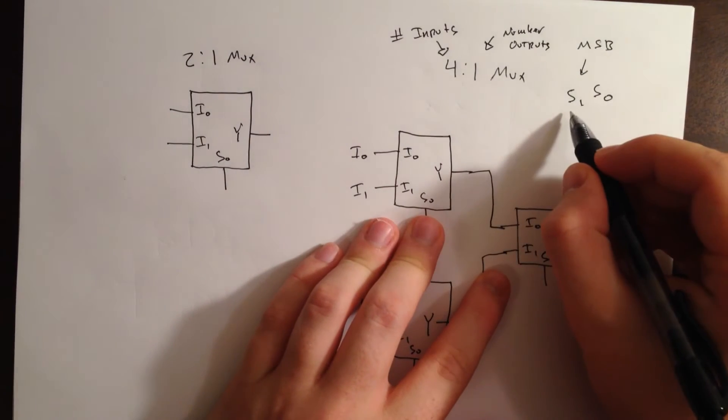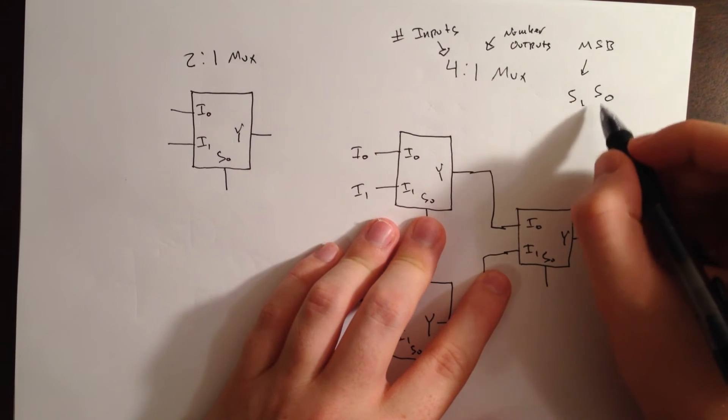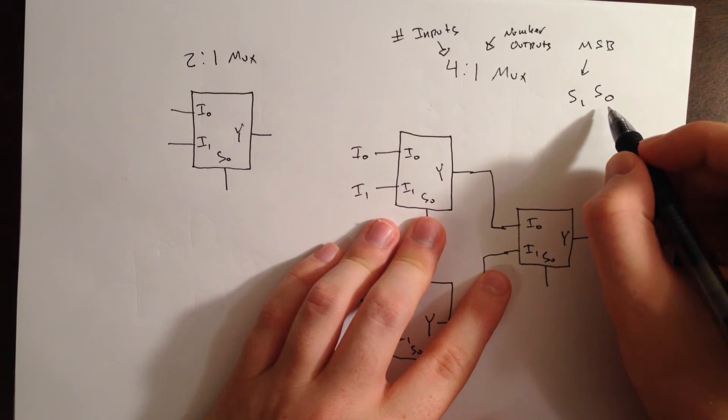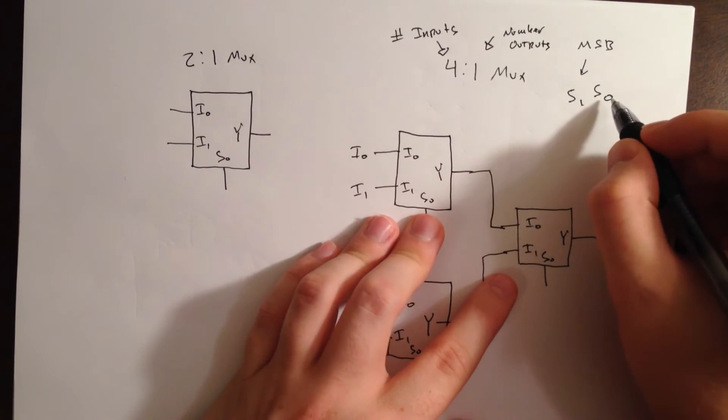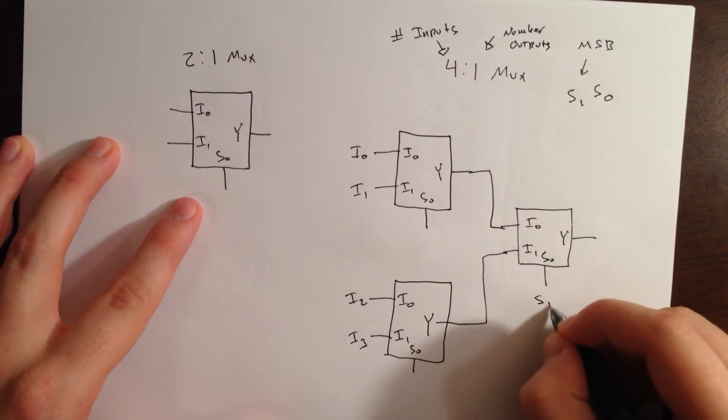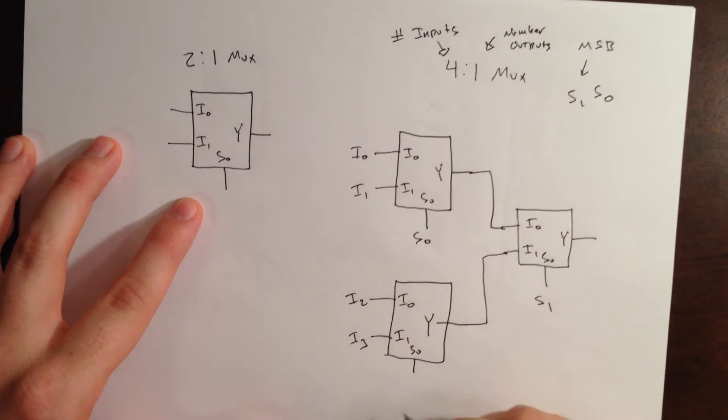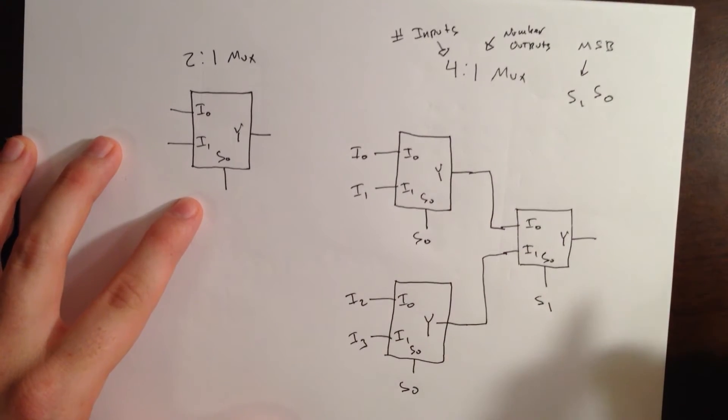Because, the value of S1 changes the decimal equivalent of this binary number more heavily than what S0 would do. So, this input right here will be S1, and this input here will be S0, and this one will also be S0.